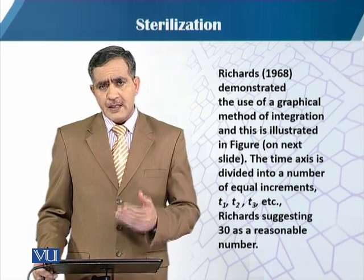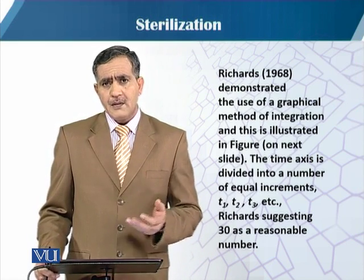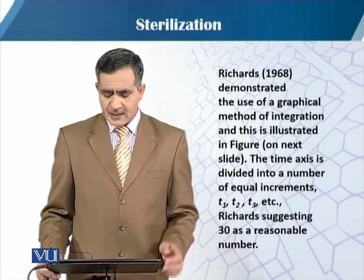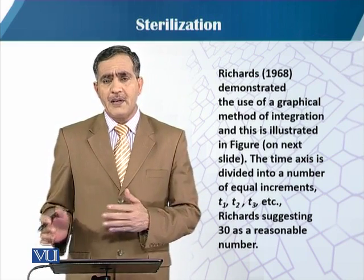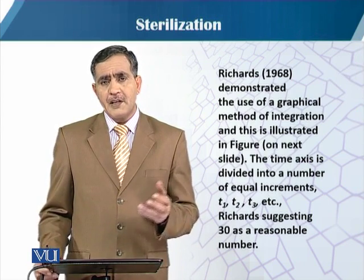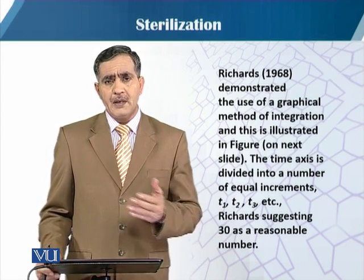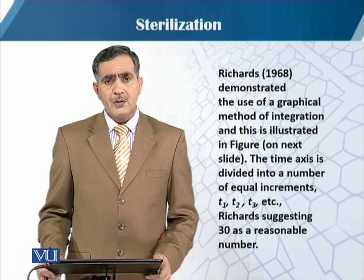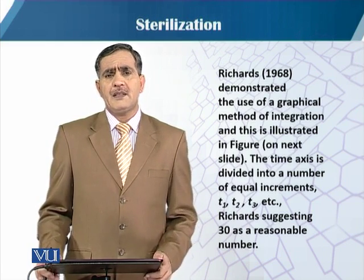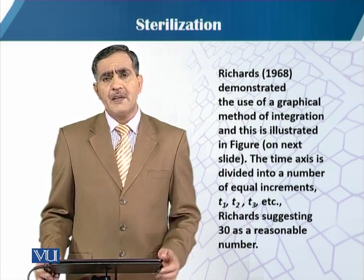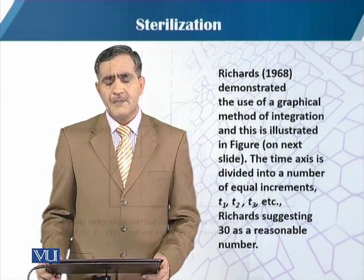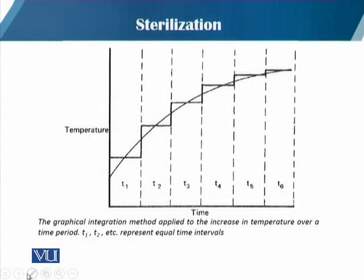In this graphical relationship, we can see how the time axis is divided into different increments according to T1, T2, T3, and so on. Richards basically suggests that 30 increments is a reasonable number to represent the temperature rise.